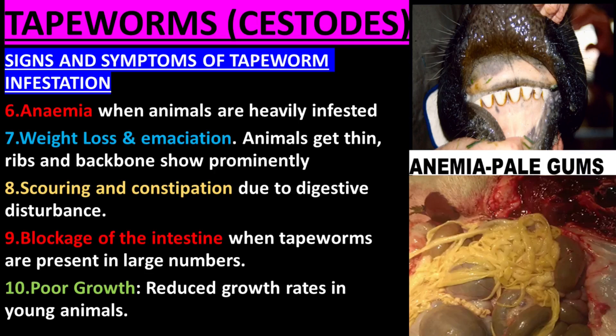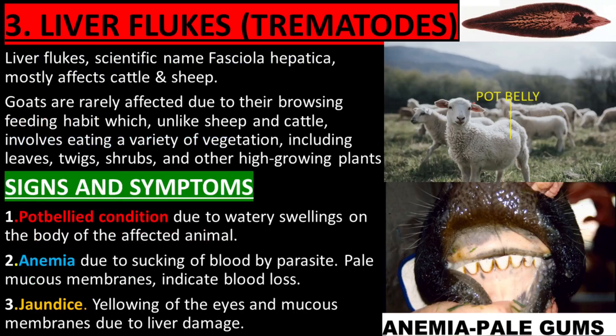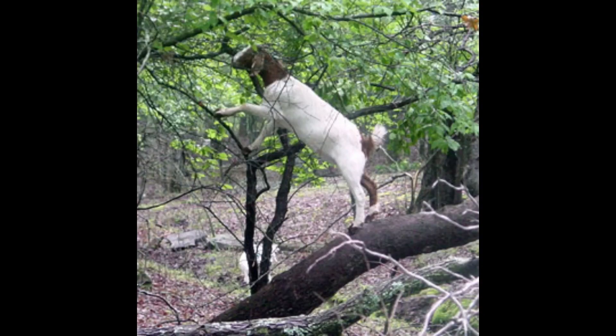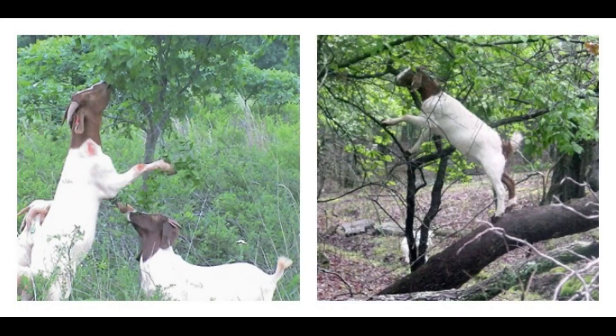Liver flukes, scientific name Fasciola hepatica, mostly affect cattle and sheep. Goats are rarely affected due to their browsing feeding habit, which — unlike sheep and cattle — involves eating a variety of vegetation, including leaves, twigs, shrubs, and other high-growing plants.